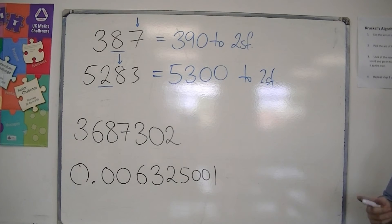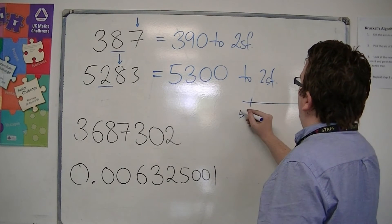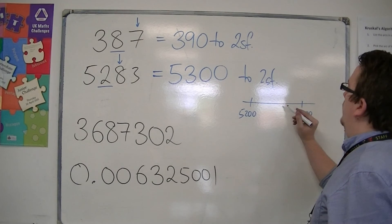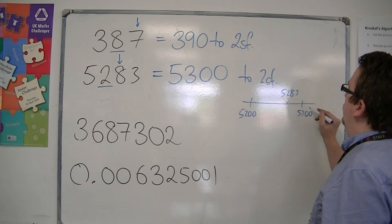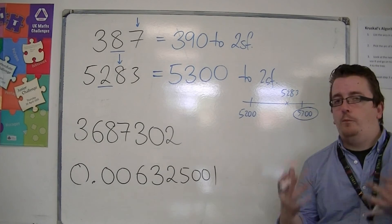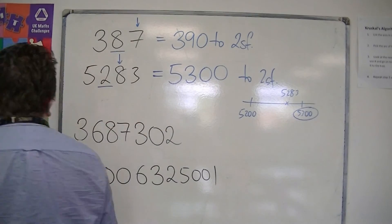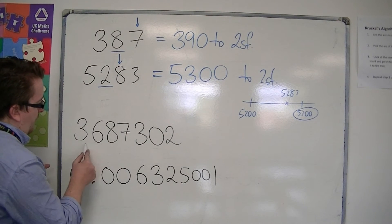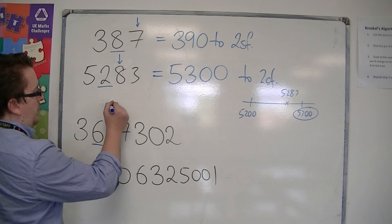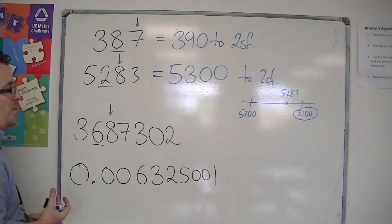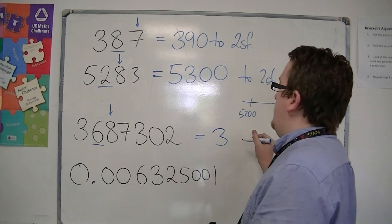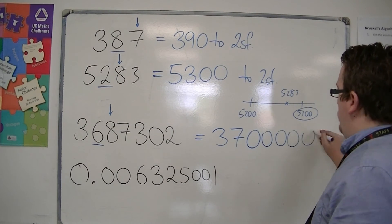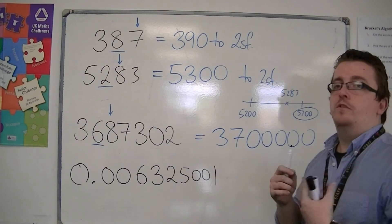On the number line, you're looking at whether 5,283 is closer to 5,200 or 5,300 — and it's easily identifiable that it would be 5,300. The third example, 3,687,302 to two significant figures: we're at our second significant figure place, and one to the right tells us to round up. So this would be 3,700,000.